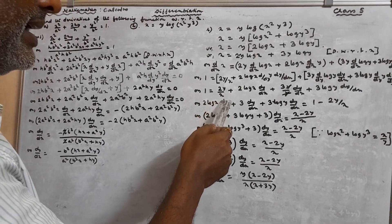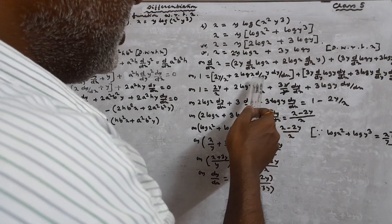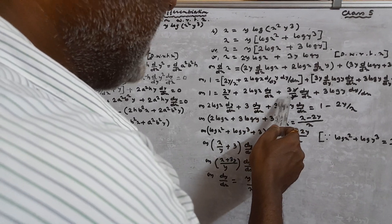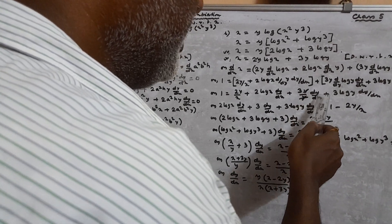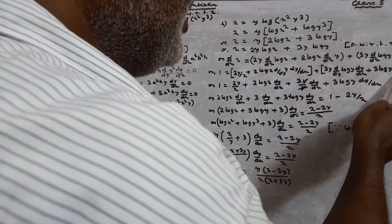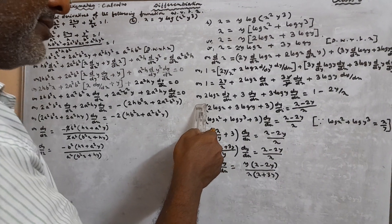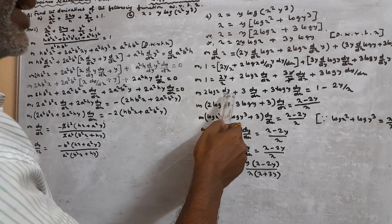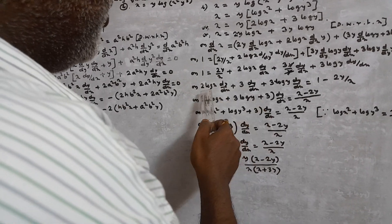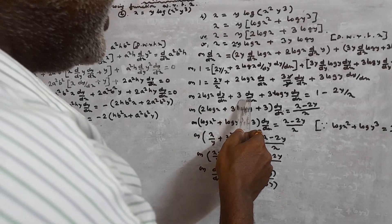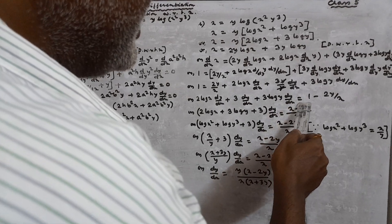Substituting: 1 = 2Y/X + 2 log X · dY/dX + 3Y · (1/Y) · dY/dX + 3 log Y · dY/dX. Simplifying 3Y·(1/Y) = 3: so 1 = 2Y/X + 2 log X · dY/dX + 3 · dY/dX + 3 log Y · dY/dX.